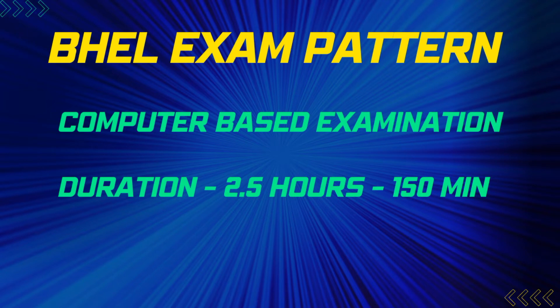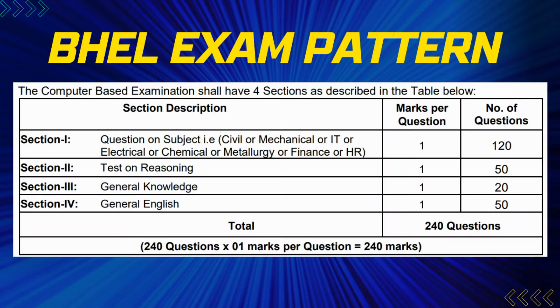The BHL exam pattern is a computer-based examination. The duration is 150 minutes, which is a very small duration compared to other exams. In the BHL exam pattern there are four sections. Section 1 is the core paper with 120 questions. Section 2 is test on reasoning with 50 questions. Section 3 is general knowledge with 20 questions. Section 4 is general English with 50 questions — totaling 240 questions.